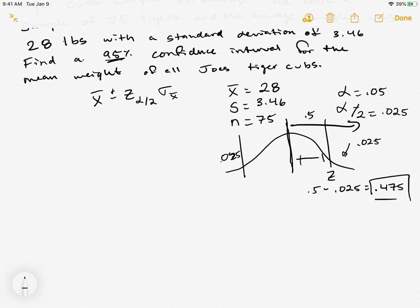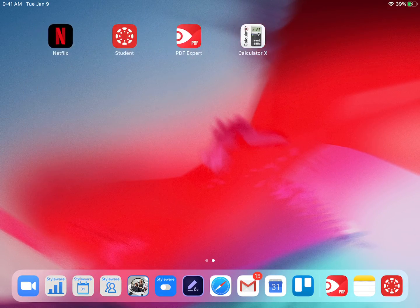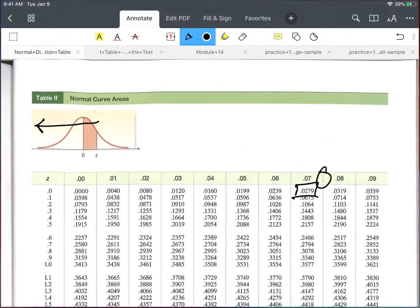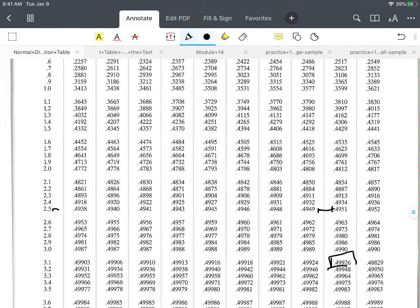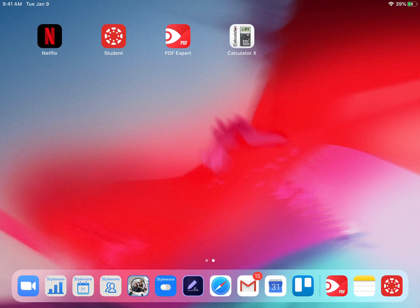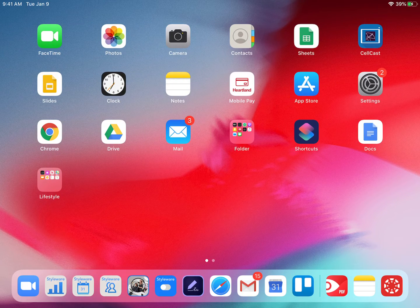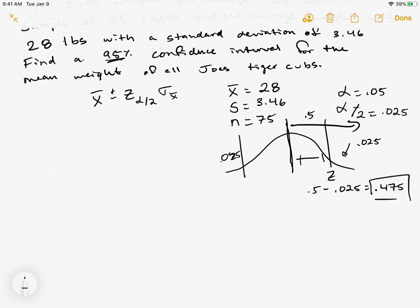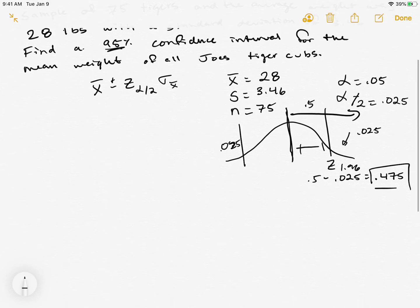We come back to our table, we look inside of it for 0.475, and wouldn't you know it, it's 1.96. For these normal tables you can remember 95% because that's the most common one, it's at 1.96. That's our z critical value.